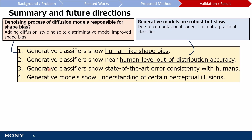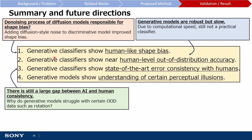Secondly, generative classifiers show near human-level out-of-distribution accuracy. While we can think of discriminative models as being fast but sensitive, generative models can perhaps be seen in a complementary way as slow but robust. Their speed is probably the main reason why discriminative models still continue to dominate image classification. Thirdly, generative classifiers show state-of-the-art error consistency with humans, though there is still a large gap between AI and humans, and it would be interesting to analyse specific cases like rotation where these gaps exist.